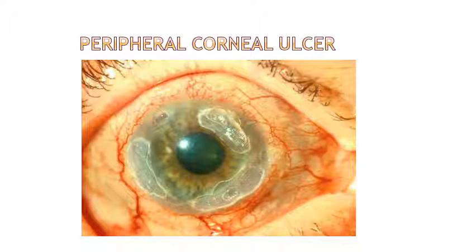In this picture you can make out multiple peripheral ulcers with the adjacent limbus completely congested, but there is no infiltration. The ulcers are clear, with no infiltrates or slough material near and around the corneal ulcers.